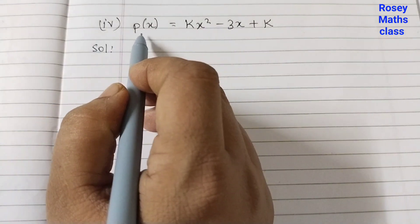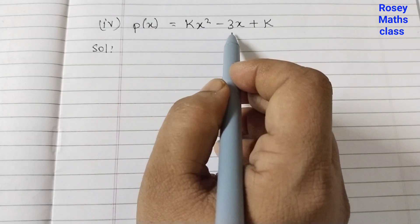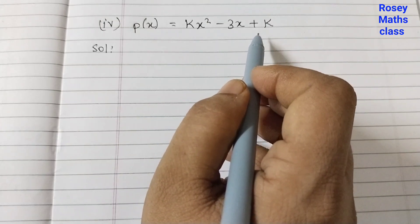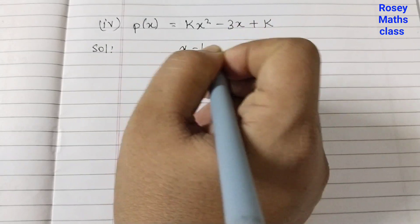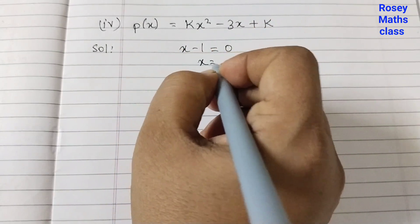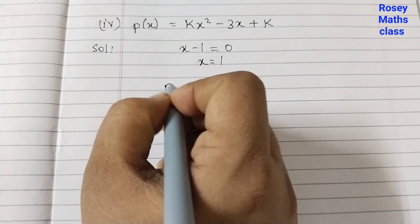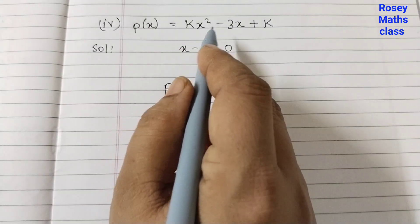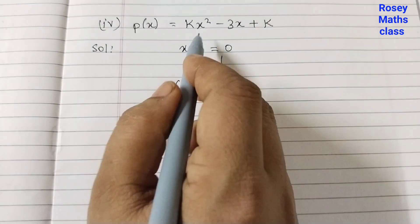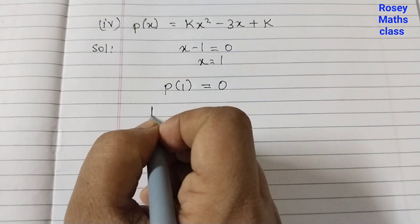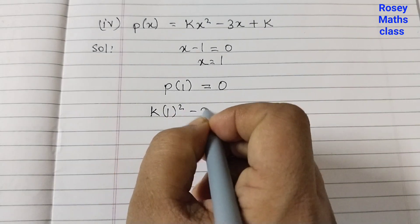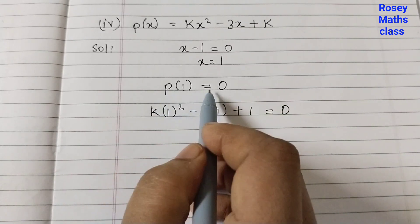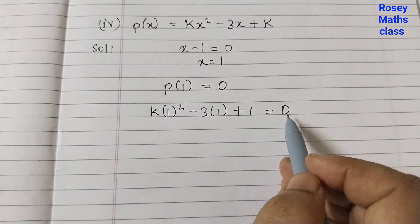The last part of this problem: p(x) equals kx squared minus 3x plus k. So here we have k appearing two times. Same way, x minus 1 is a factor, so set x minus 1 to 0, giving x equals 1. p of 1 must be equal to 0 because x minus 1 is a factor. Find p of 1 by replacing x with 1: k times 1 squared minus 3 times 1 plus k equals 0.